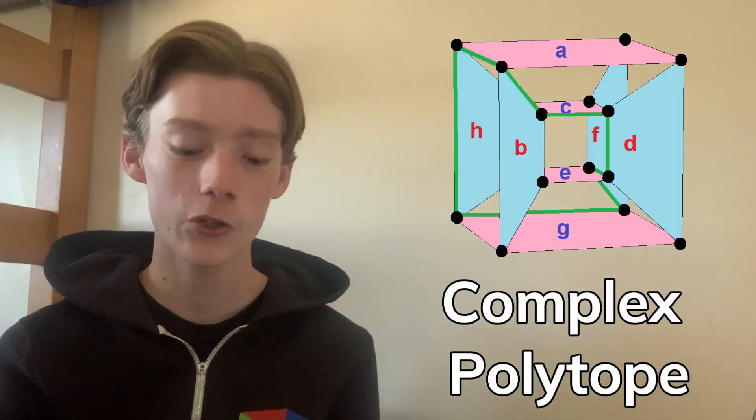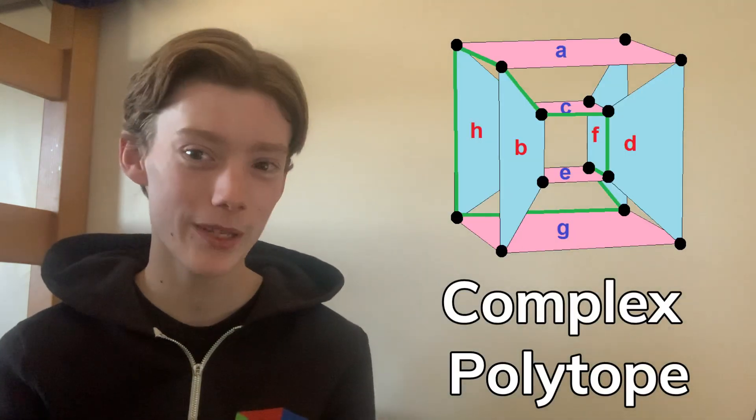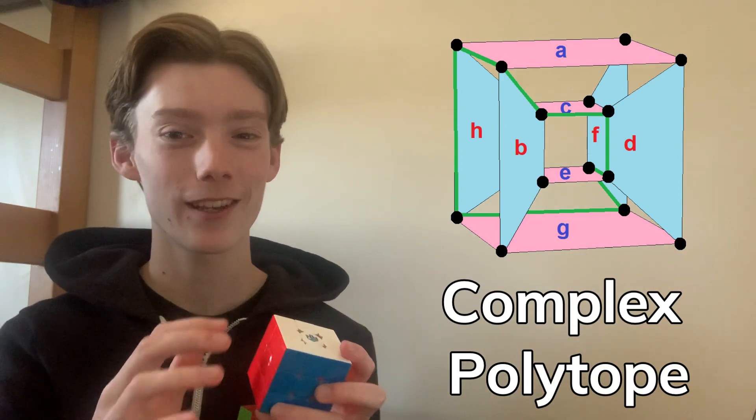You see there's something called a complex polytope, which isn't about the number of dimensions being complex, it's about the shapes being complex. So for each real dimension there's also somehow an imaginary one, so for like a two-dimensional complex cube it's gonna be four dimensions, but two of the dimensions would be imaginary, so there's weird stuff happening.